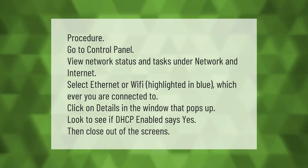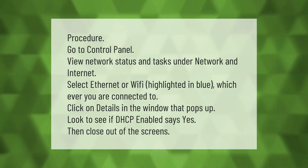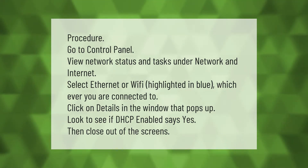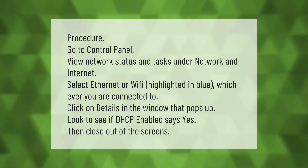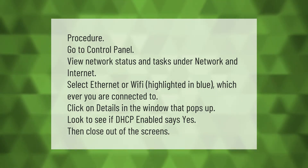Go to Control Panel, view network status and tasks under Network and Internet. Select Ethernet or Wi-Fi — whichever you are connected to, highlighted in blue. Click on Details in the window that pops up. Look to see if DHCP Enabled says Yes, then close out of the screens.